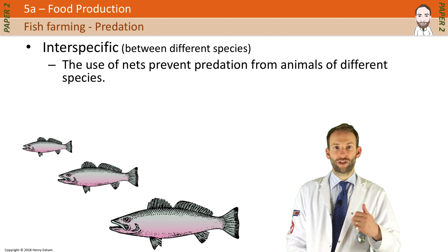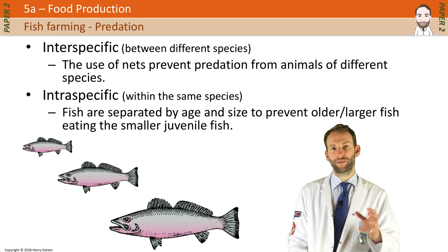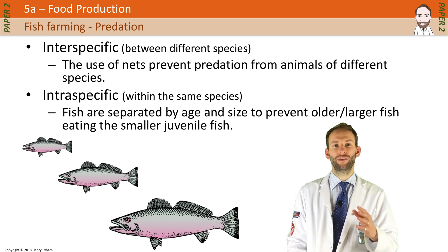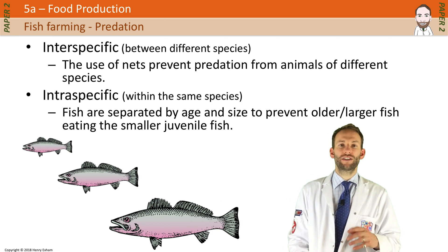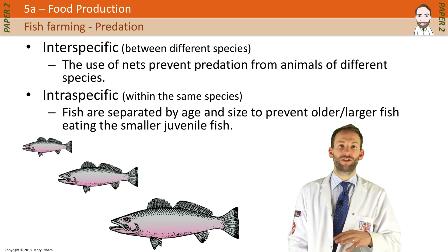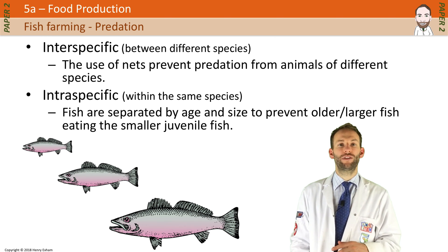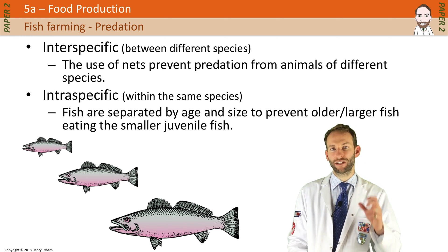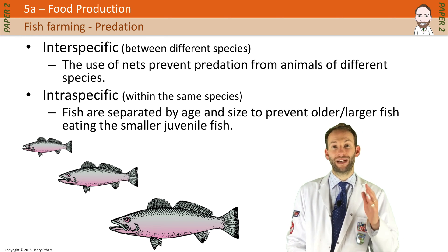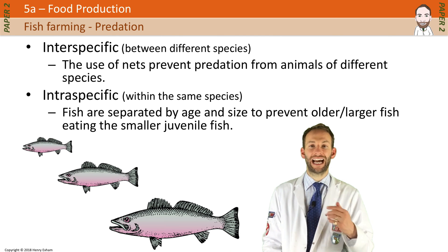There's also an issue with intraspecific predation - this is predation from the same species. Bigger fish of the same species will actually eat smaller fish. So what you have to do very carefully is to separate the fish by age and by size to prevent that happening.